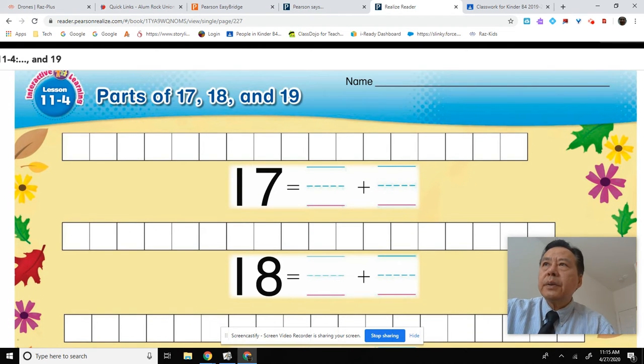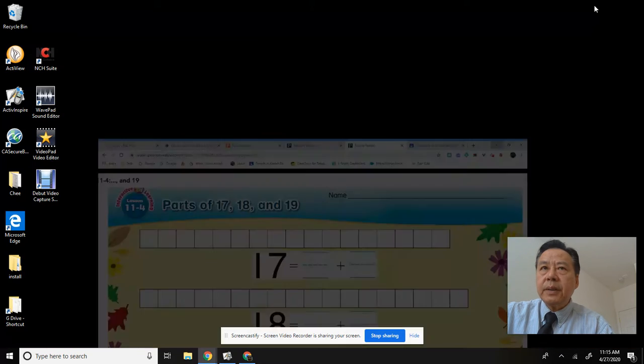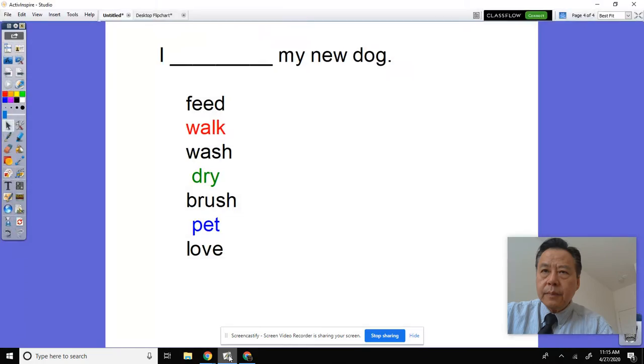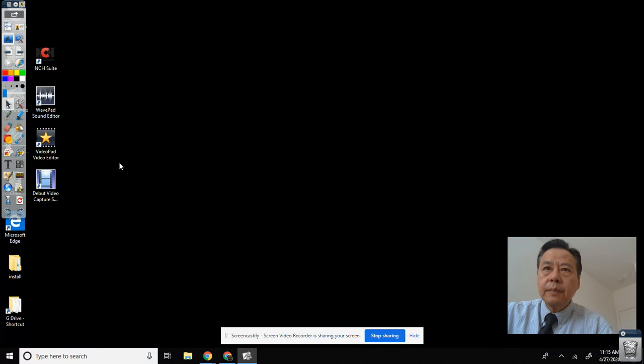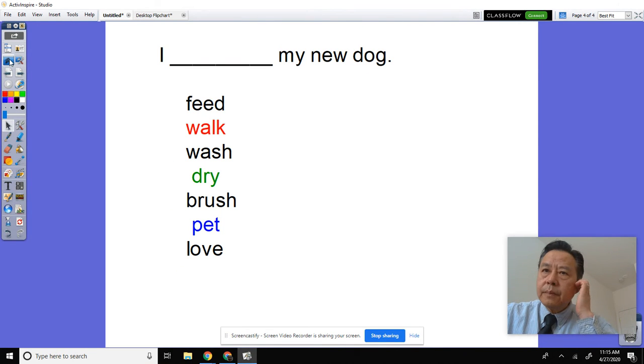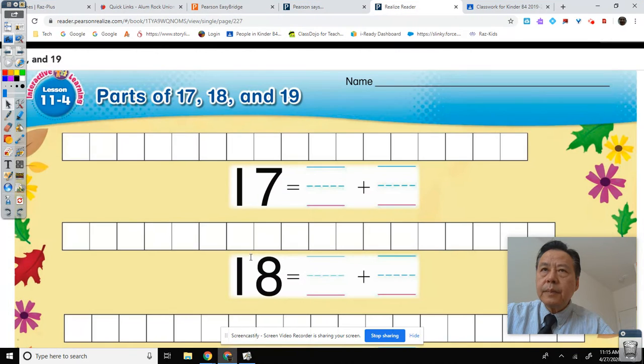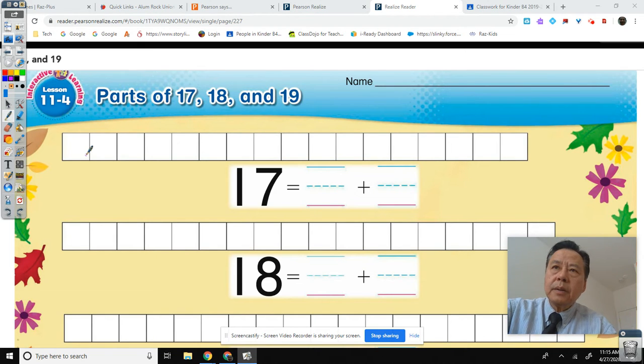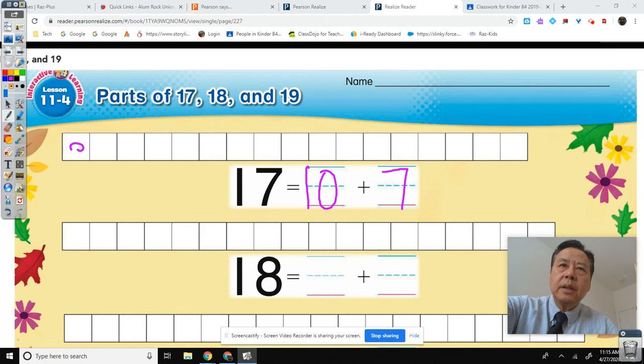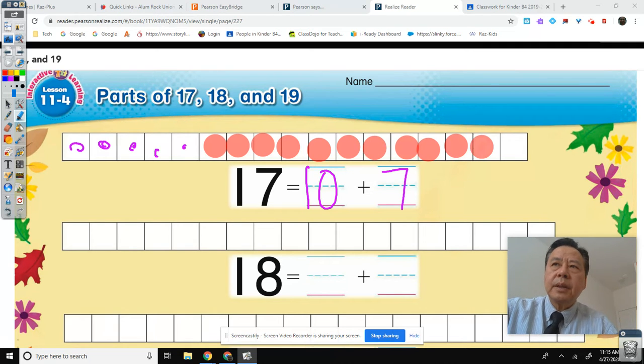All right, looks like I'm going to have to get the Active Inspire to work here. All right, so. 17 is equal to 10 plus 7. So you just got 1, 2, 3, 4, 5, 6, 7, 8, 9, 10, 11, 12, 13, 14, 15, 16, 17.